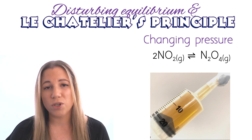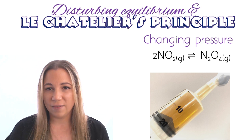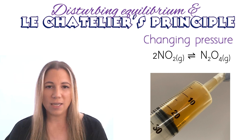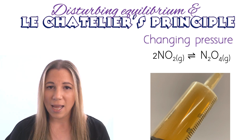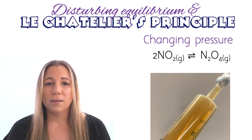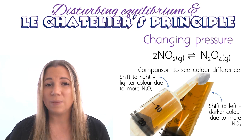Now let's see what happens if we do the reverse — decreasing the pressure by increasing the volume. We would expect the equilibrium to shift the other way, towards the left, the reverse reaction, and create more of the nitrogen dioxide. Since nitrogen dioxide is the brown gas, we expect the colour to go darker and more nitrogen dioxide to be produced.